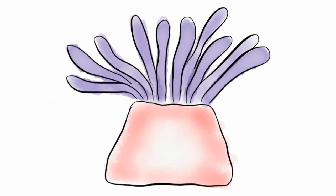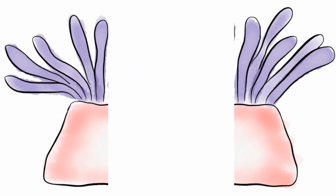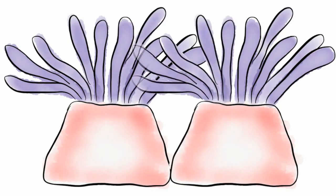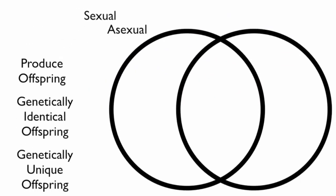Some organisms produce offspring by splitting into pieces. A sea anemone can split down the middle, resulting in the production of another individual. Sexual and asexual reproduction produce offspring.